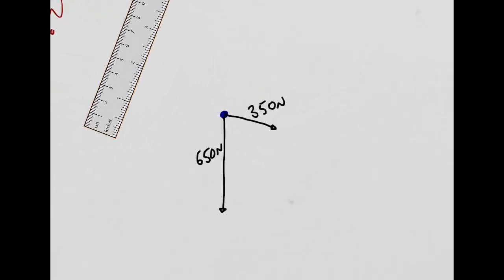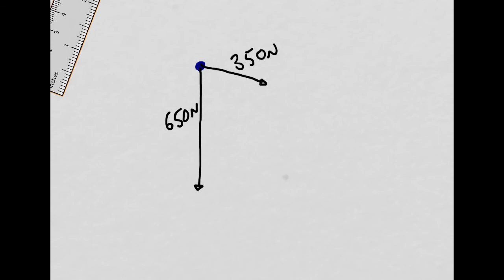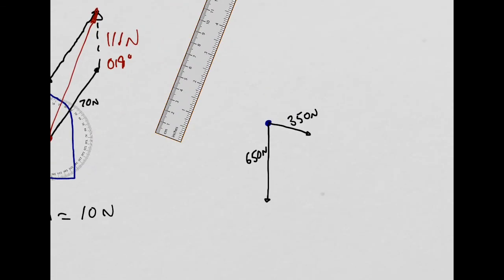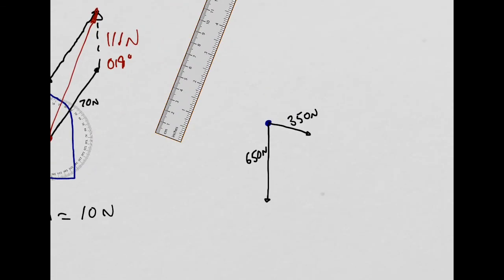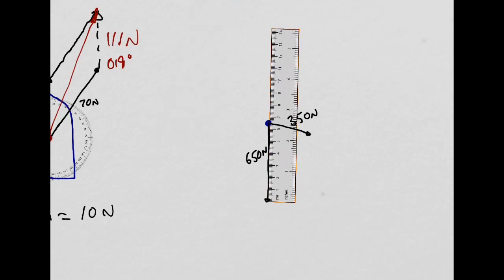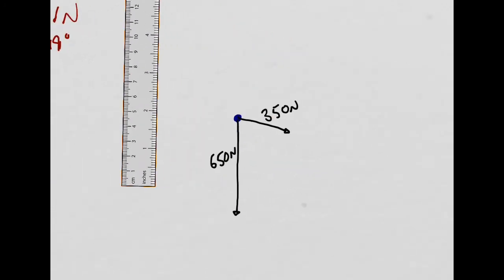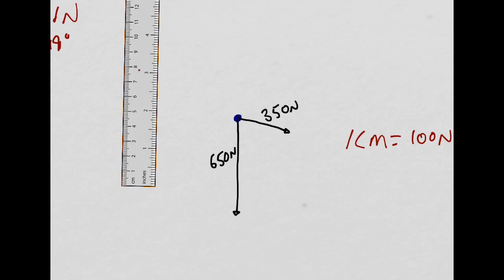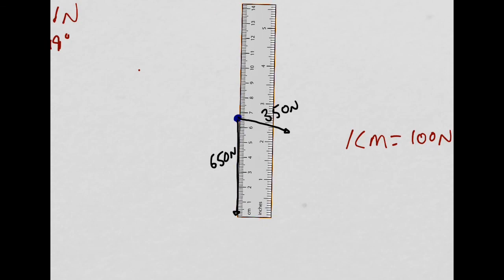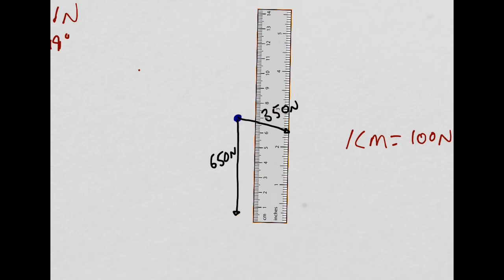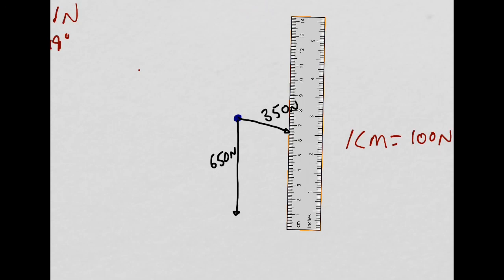Let's do the same for this case — this time it's just a free body diagram on its own. Using the ruler to measure the scale factor: that's about 6.5 centimetres for 650 newtons, so each centimetre is equivalent to 100 newtons. I'm going to move that arrow so it's tip to tail with the other arrow, drawing another 6.5 centimetre arrow. The resultant force is drawn here.